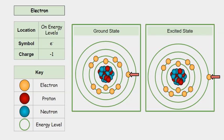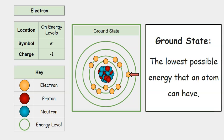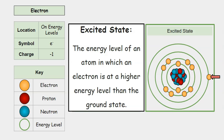When this happens, you'll have two states. The ground state, which is the lowest possible energy that an atom can have, and the excited state, which is the energy level of an atom in which the electron is at a higher energy level than the ground state.